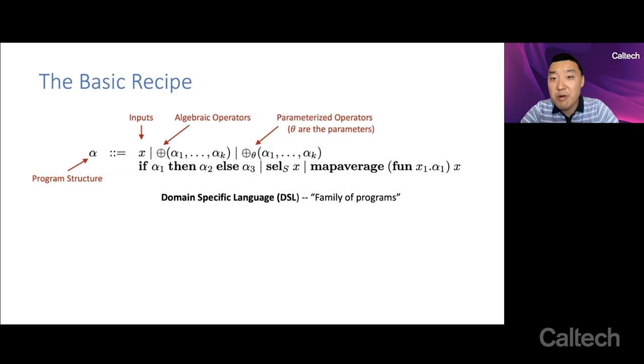You have parameterized operators. So theta are the continuous parameters of these operators, like distance functions, affine functions, any kind of parameterized library functions you want to include in this language. They could also be small neural networks that are perhaps pre-trained to have a certain behavior, but then you can also tune the parameters of the neural networks.